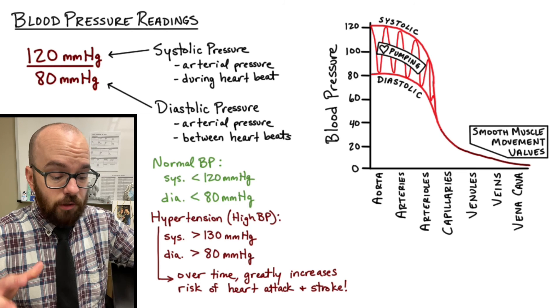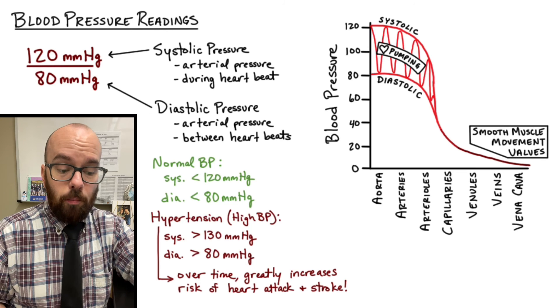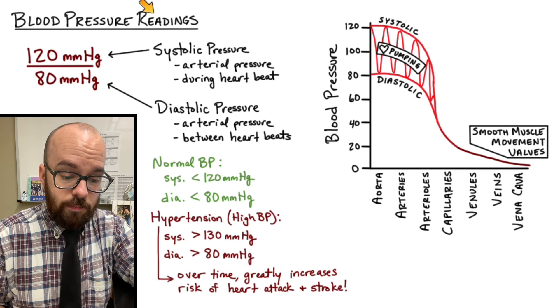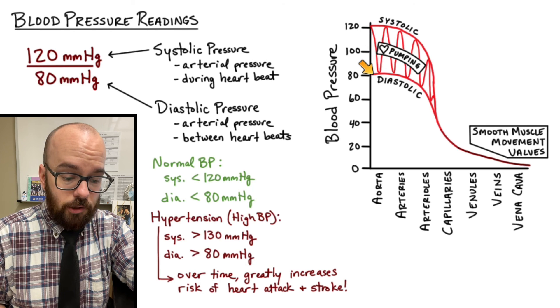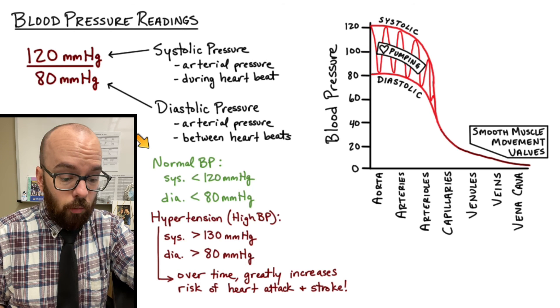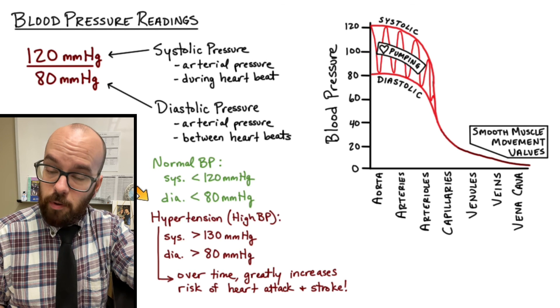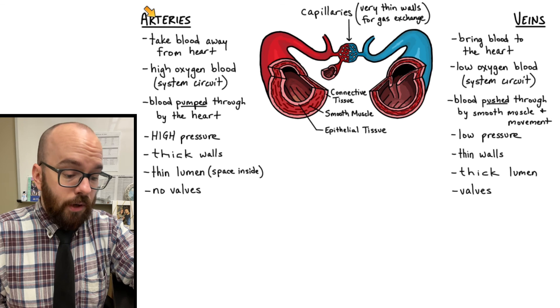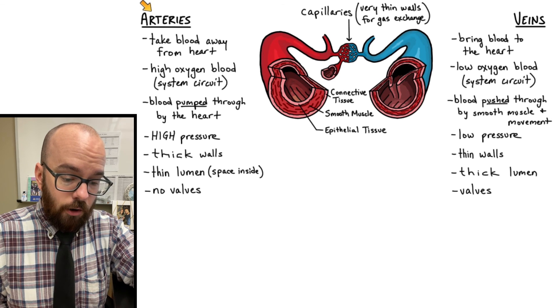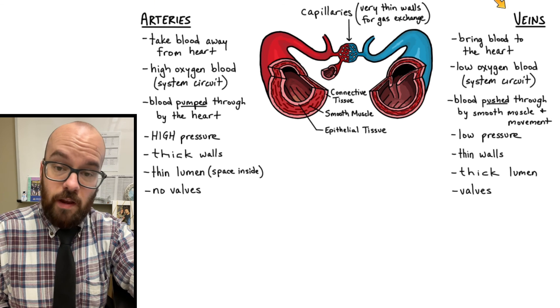Hopefully this was helpful in understanding what blood pressure readings mean, the difference between systolic and diastolic pressure, what normal and dangerous blood pressures are, as well as the primary differences between arteries and veins.